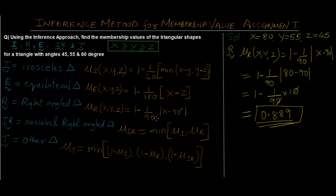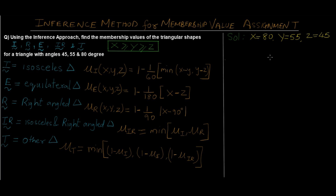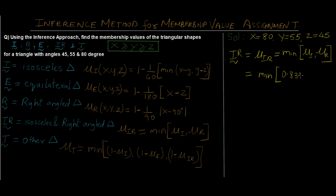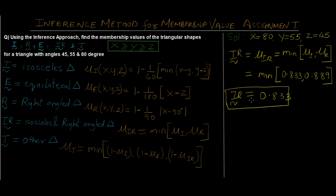For the isosceles right angle triangle, the formula is μ_IR = min(μ_I, μ_R). We have already calculated μ_I = 0.833 and μ_R = 0.889. The minimum of these two is 0.833, so that is directly our answer. This one was pretty straightforward.